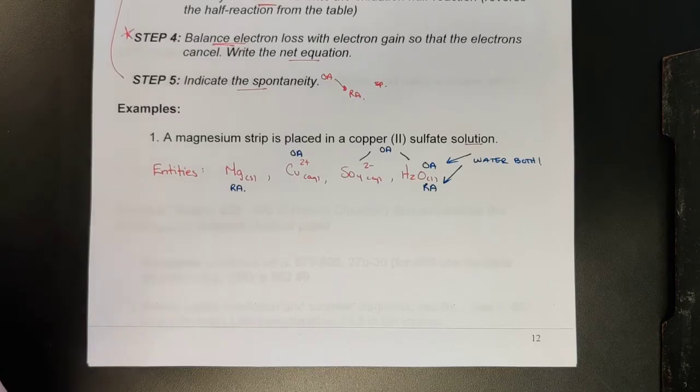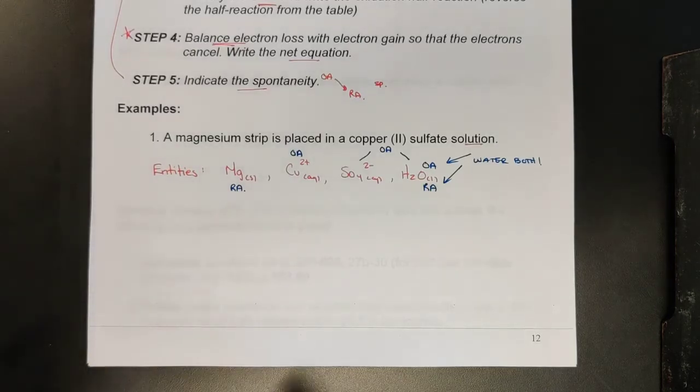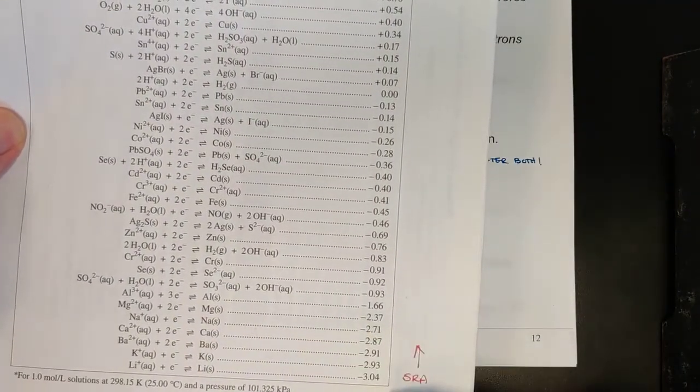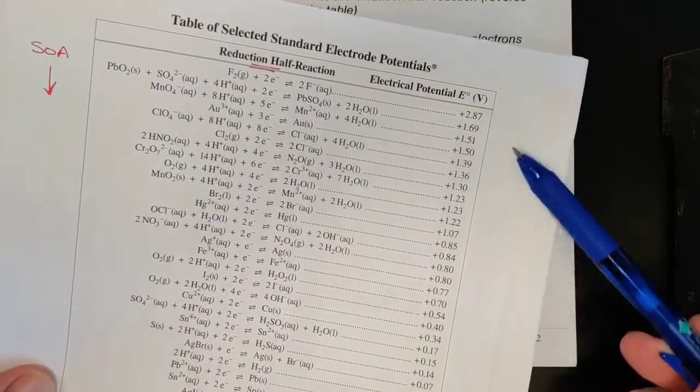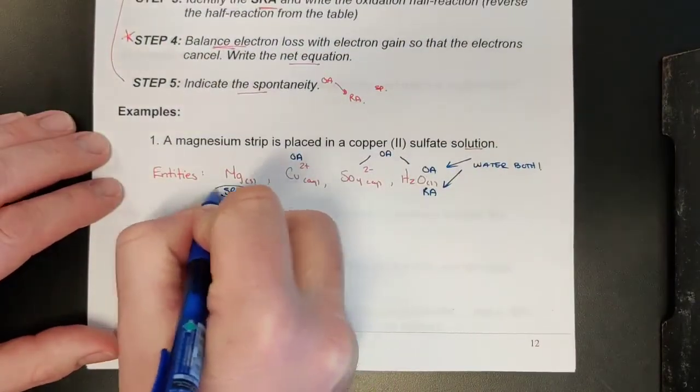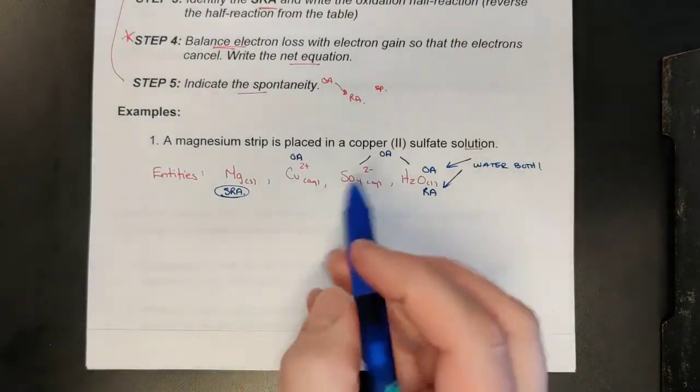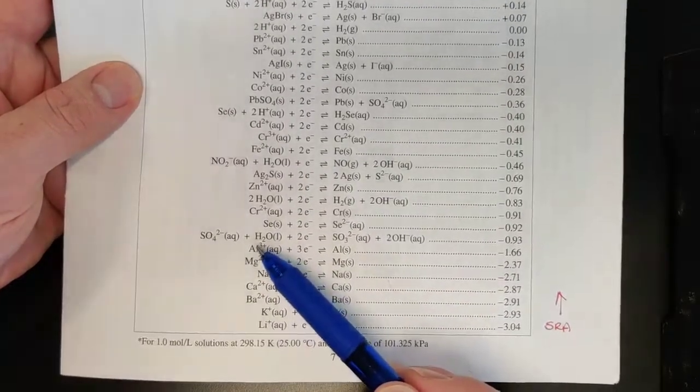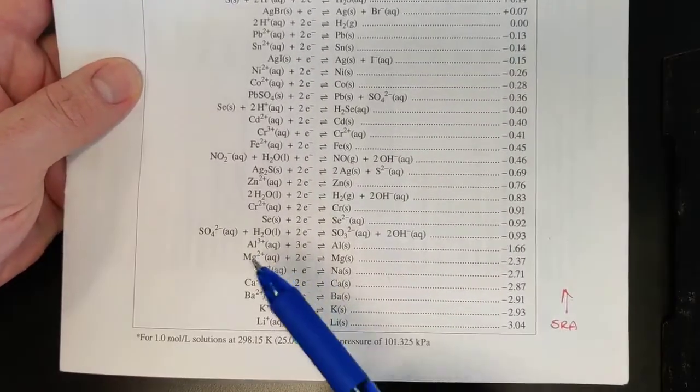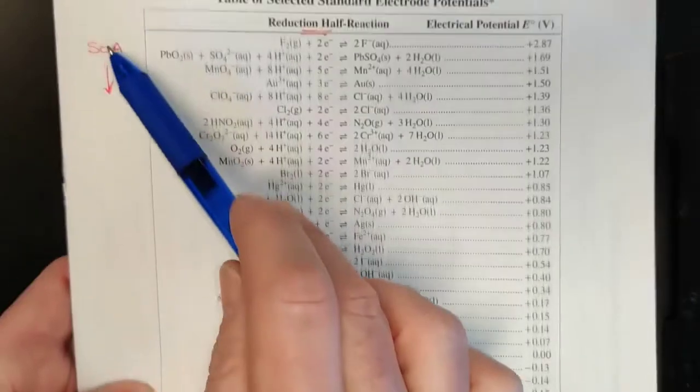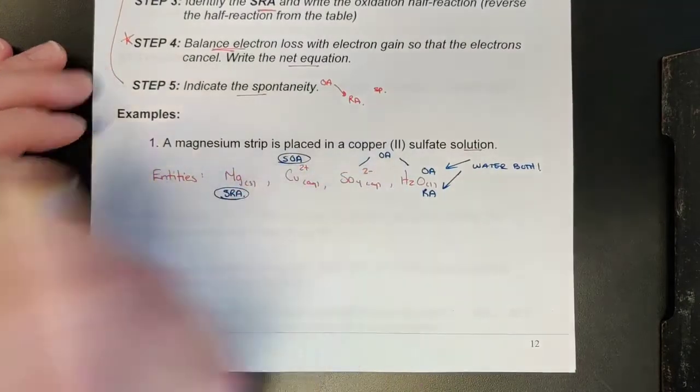Which one runs the reaction? Well, the reaction will always take place between the strongest of each. So of the two RAs, I had magnesium way down here in the strong section and water way up here in the weak RA section. So the strongest reducing agent is the magnesium metal—highlight that. I then had three OAs to look at. Water was fairly weak down here, sulfate-water combo was even weaker, and then we had to find copper 2+, which is getting close to the strong OA side. It's the strongest of the three we had, and so this should be my reaction between copper 2+ ions and the magnesium.